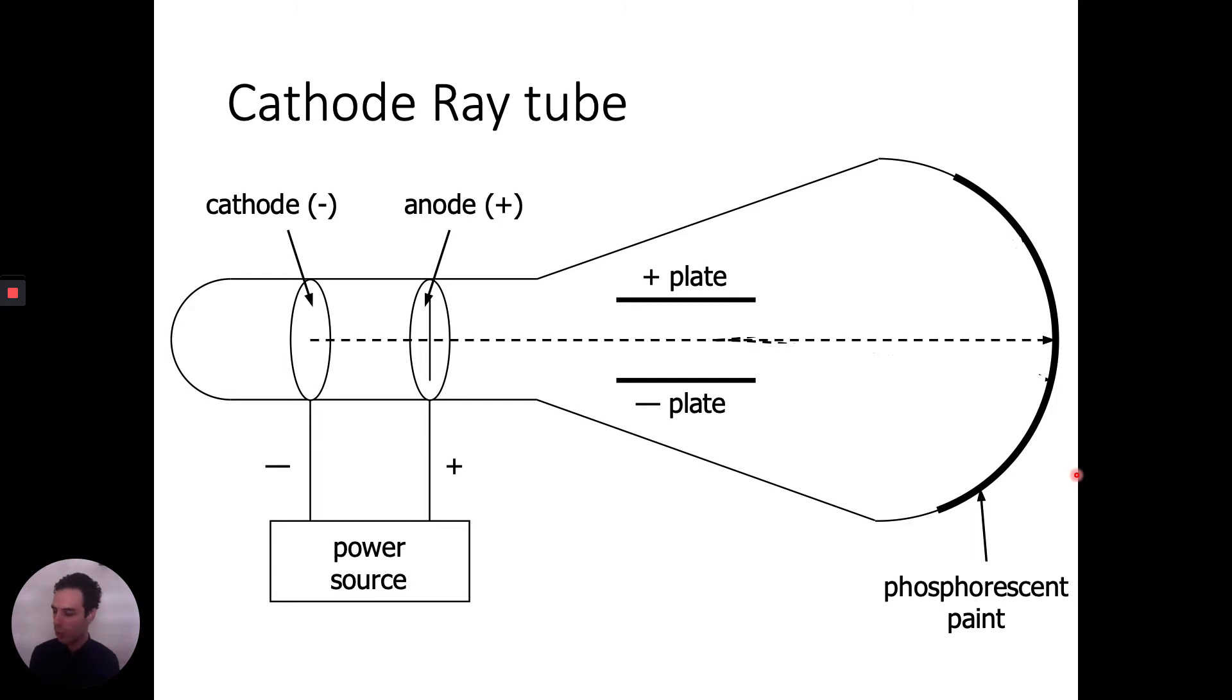When you shoot a beam right through this cathode ray tube, we expect it to go straight through. That's pretty much what would make sense. But when we add these positive and negative plates, this plate here is positively charged, this plate here is negatively charged, what happens is that the cathode ray gets deflected. And it gets deflected up towards the positive plate. Now why might that happen? Well, if you remember that opposite charges attract, if the cathode ray gets bent towards the positive plate, that means that the cathode ray has a negative charge. That's important piece of information number one.